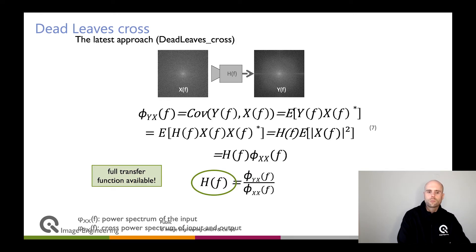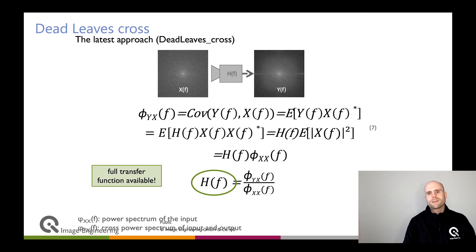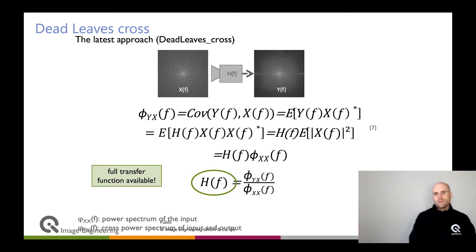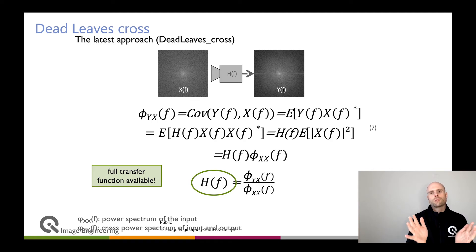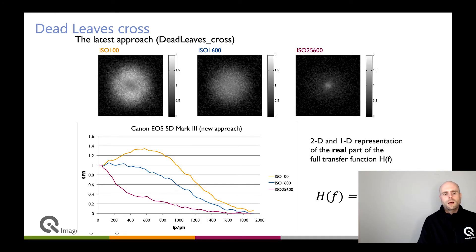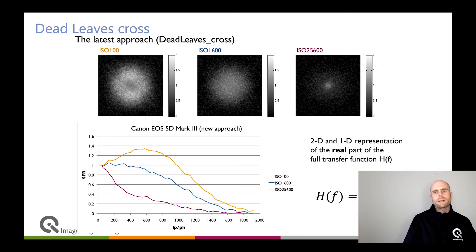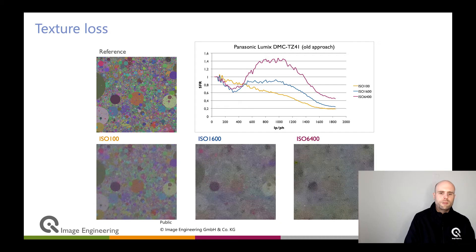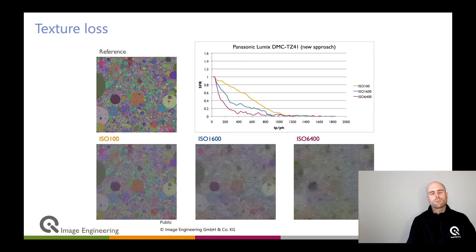That is why the dead leaves cross method was introduced, using the cross power spectrum of input and output. The algorithm is presented in a downloadable paper. The benefit is that you have the full transfer function — both phase and amplitude — and you can use the phase to differentiate between information that came from the target itself and information that is just noise. This makes the method much more robust against noise influence. You compute a two-dimensional transfer function, take the real part, and reduce it to a one-dimensional SFR, giving much more intuitive and correct results.